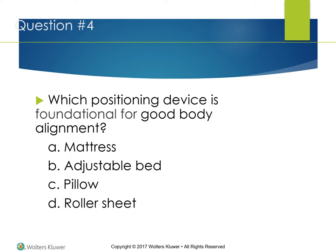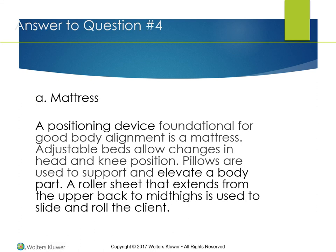Question: Which positioning device is foundational for good body alignment — mattress, adjustable bed, pillow, or roller sheet? The answer is mattress — a positioning device foundational for good body alignment. Adjustable beds allow changes in head and knee position. Pillows are used to support and elevate a body part. A roller sheet that extends from the upper back to mid-thighs is used to slide and roll the client.